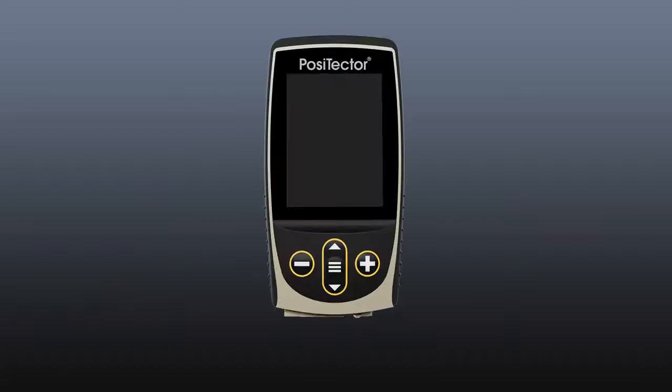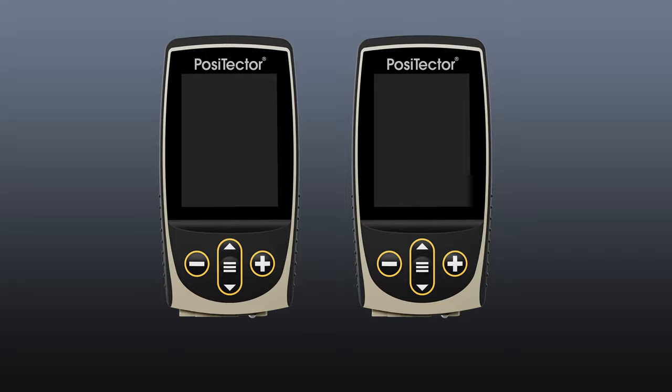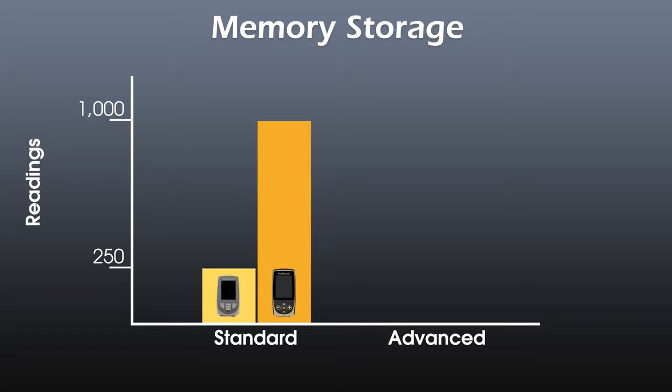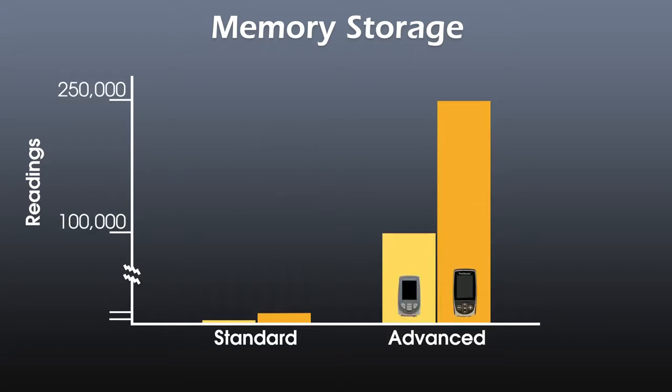Like before, there are two models of the Positector gauge body, standard and advanced. The standard model now stores 1,000 readings per probe. The advanced model now stores up to 250,000 readings in up to 1,000 batches or groups.